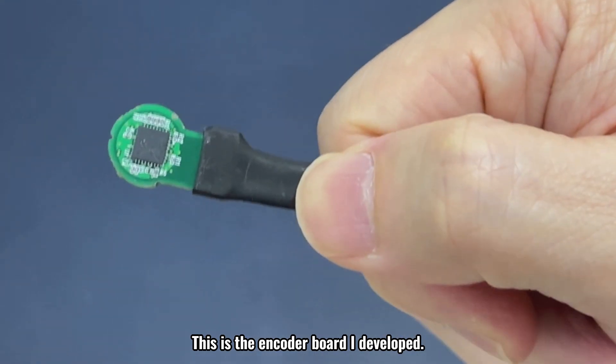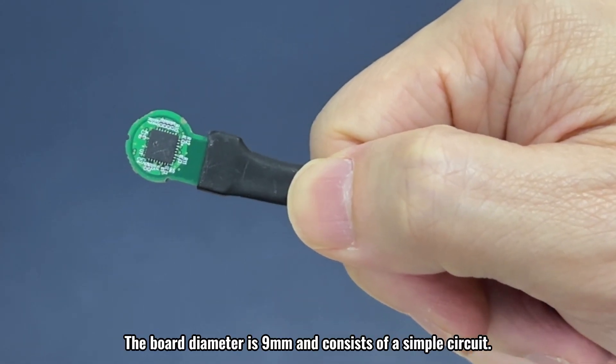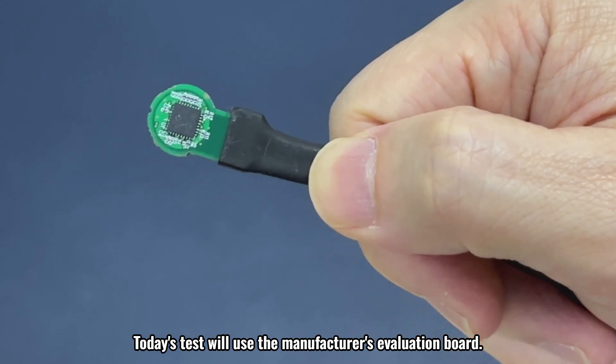This is the encoder board I developed. The board diameter is 9mm and consists of a simple circuit. Today's test will use the manufacturer's evaluation board.